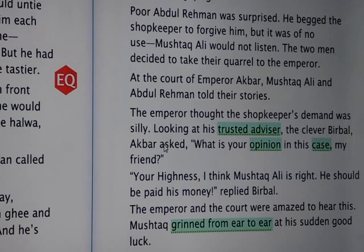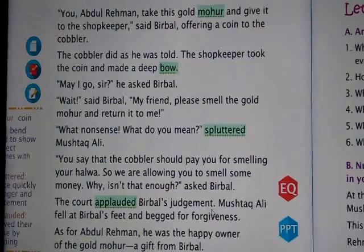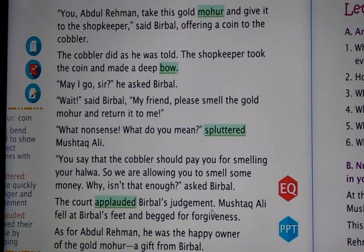The Emperor and the court were amazed to hear this. Mushtaqa grinned from ear to ear at his sudden good luck. 'You, Abdul Ramad, take this gold mohur and give it to the shopkeeper,' said Birbal, offering a coin to the cobbler. The cobbler did as he was told. The shopkeeper took the coin and made a deep bow. 'May I go, sir?' he asked Birbal. 'Wait,' said Birbal.